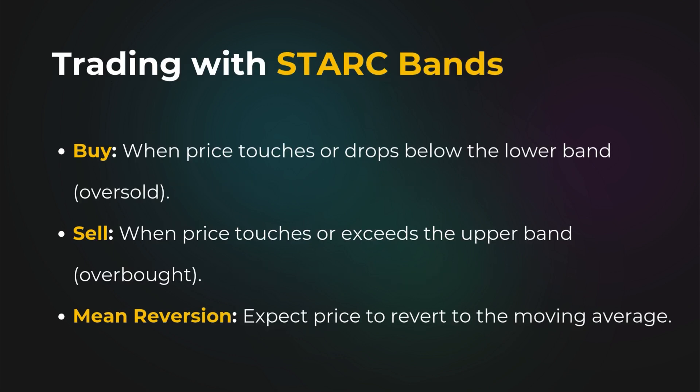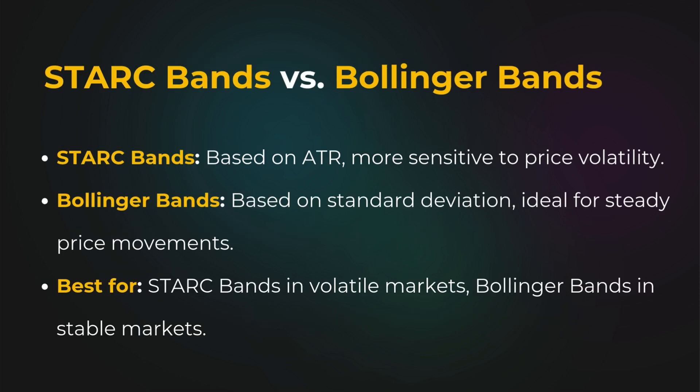Traders buy when the price hits the lower band and sell when it touches the upper band, signaling overbought or oversold conditions. STARK bands are also effective for mean reversion strategies, where prices are expected to return to the moving average.